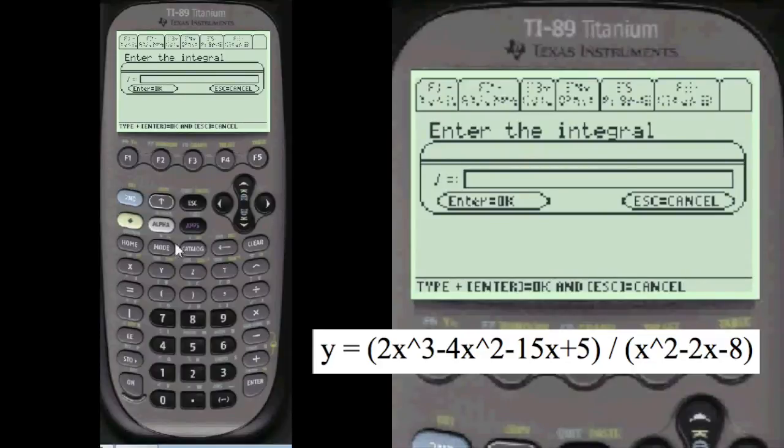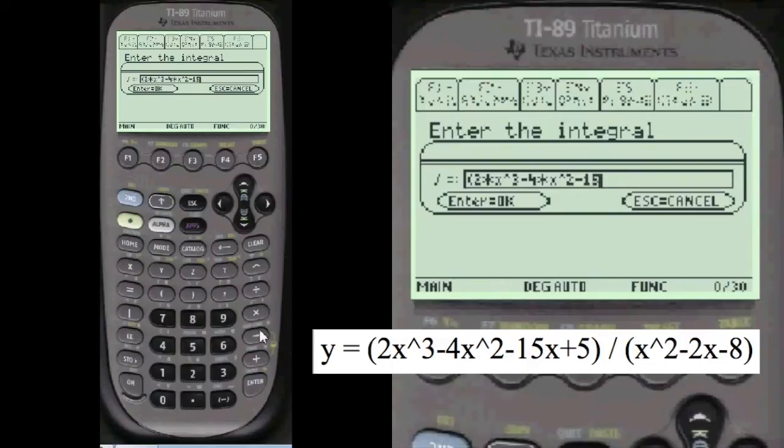We're going to enter the integral, and that is quite long, but I'm going to do it. You have to press alpha before you enter anything in these entry lines. Alpha, left parenthesis, 2 times x cubed minus 4 times x squared minus 15 times x plus 5. Close off the parenthesis. Divide sign, more parenthesis, x squared minus 2 times x minus 8.